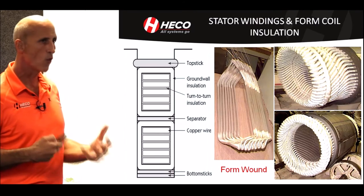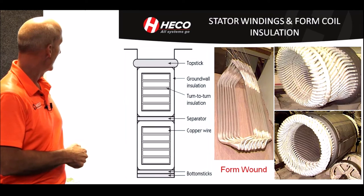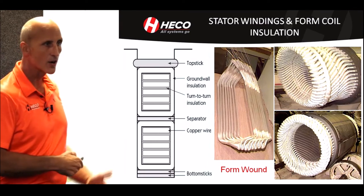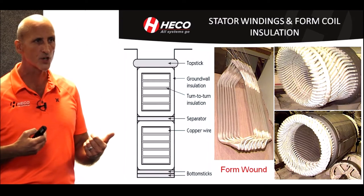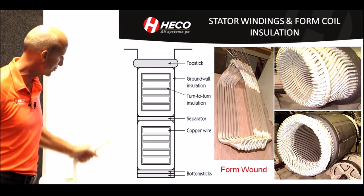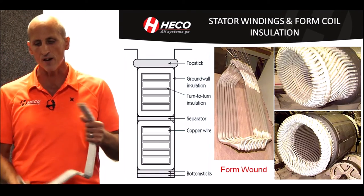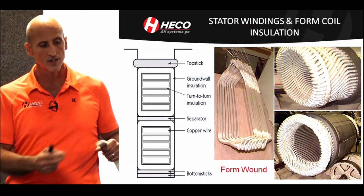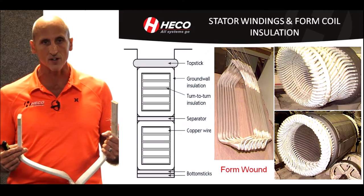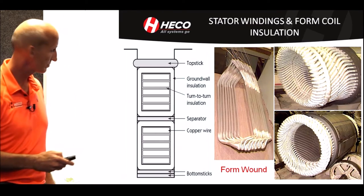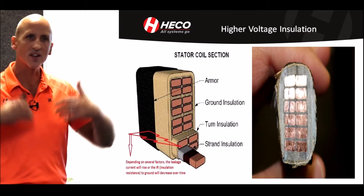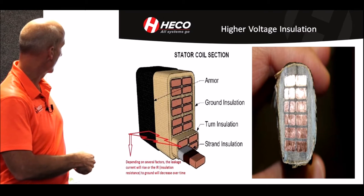Basic insulation design of all form coils — larger horsepower. You've got a slot that has two coil halves in it. You've got the wire, and then the wire has what we call turn insulation. Depending on the number of turns, the coil then gets wrapped with so many layers of mica depending on voltage. This is a 4,000 volt cutaway view of a coil — actually only three turn, but it has six conductors in parallel, and it's mica turn taped, a special application requiring a little more insulation. Higher voltage insulation — the concept's the same, except you have thicker insulation that can handle higher voltages.